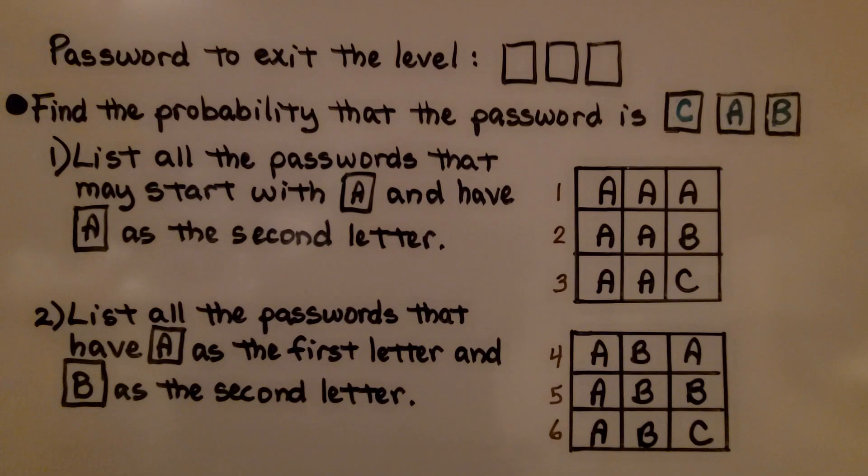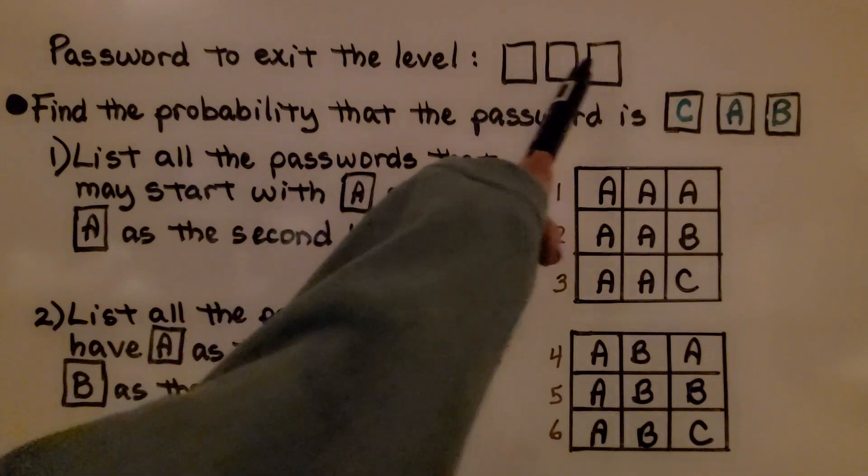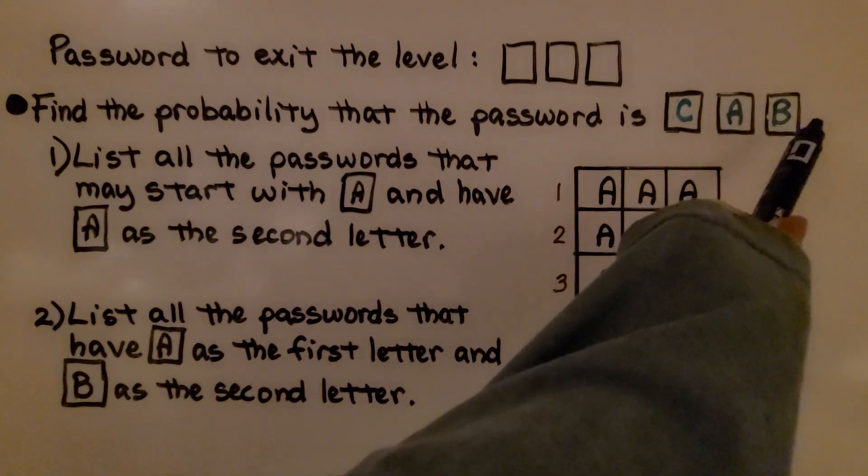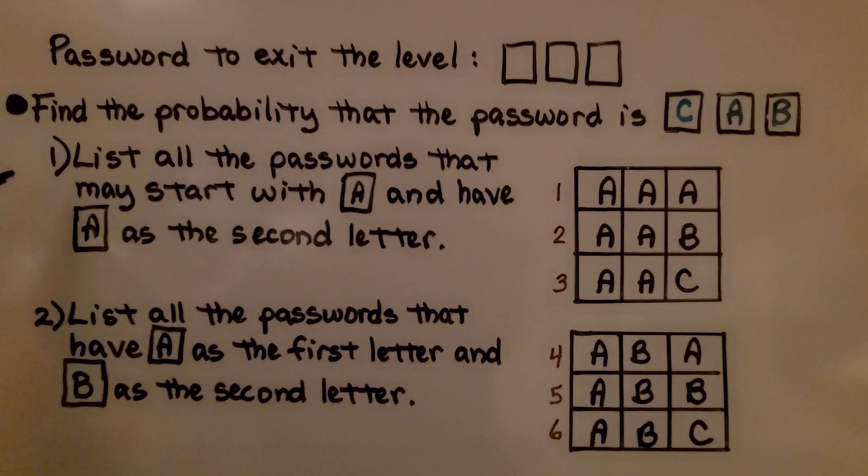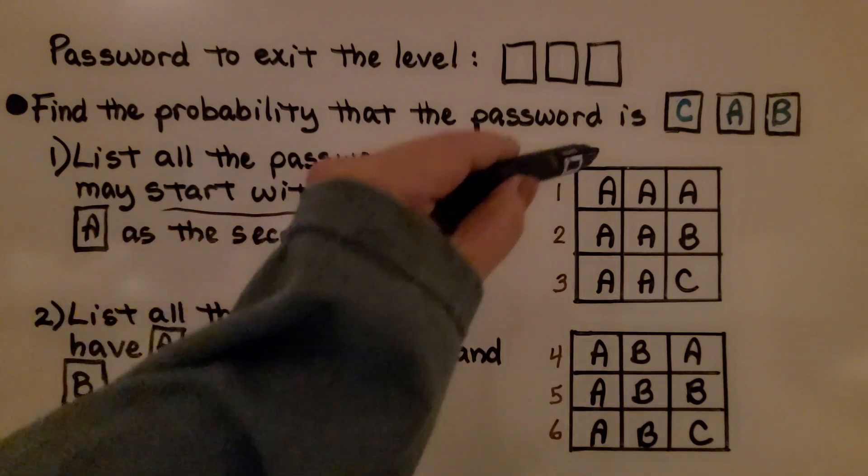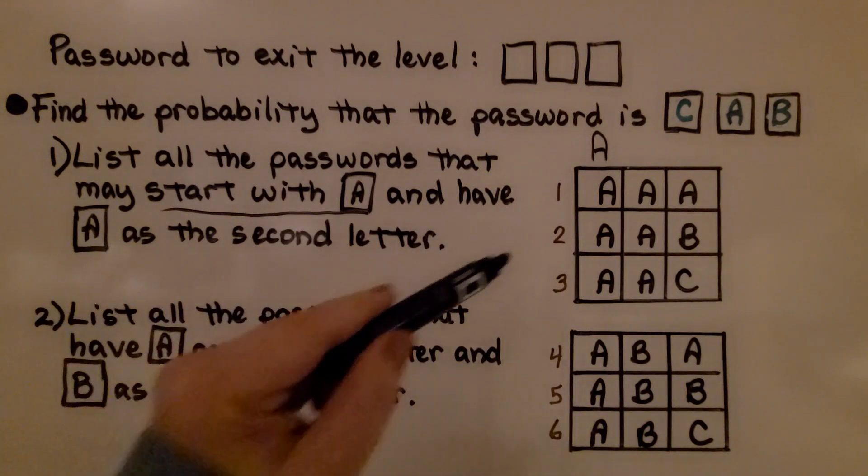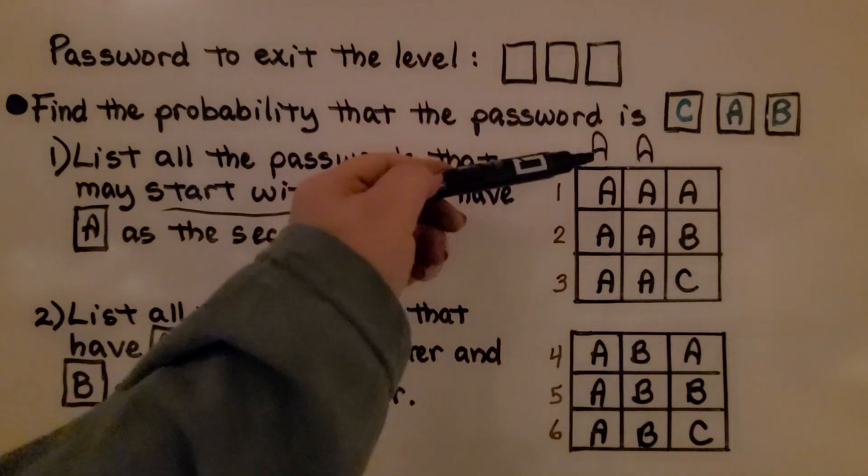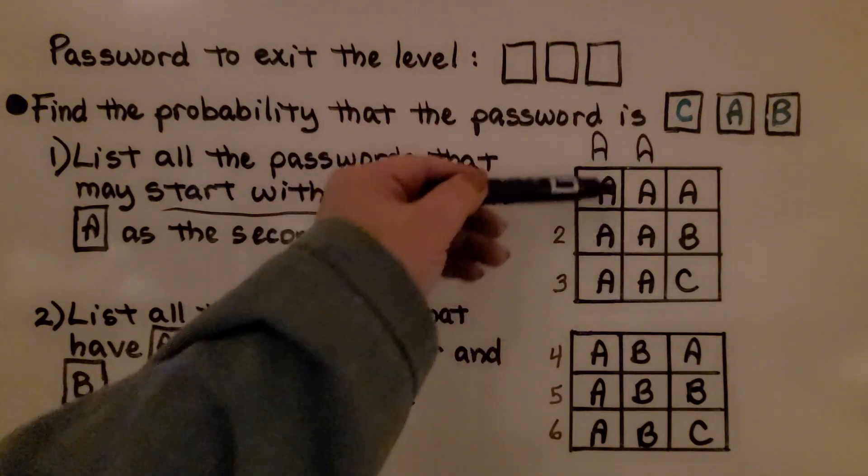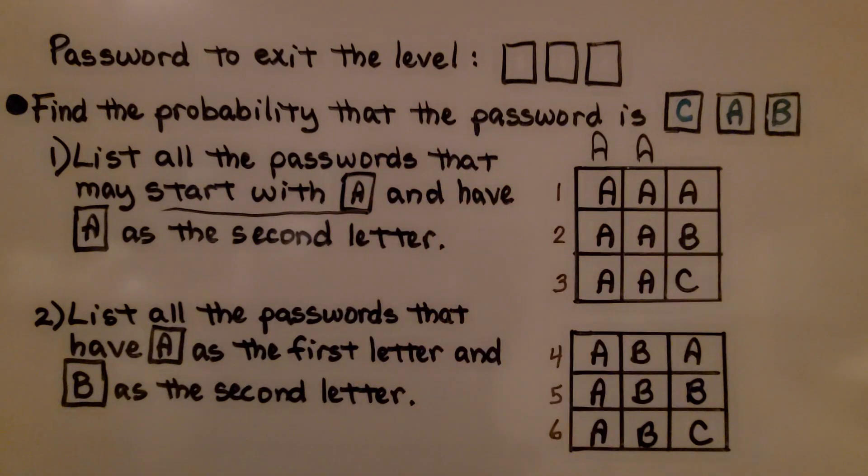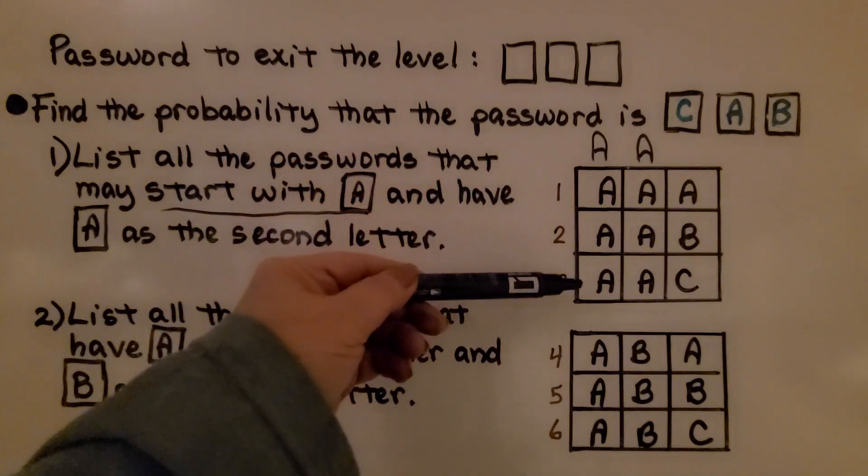We're trying to find this password to exit the level of the video game. We don't know what it is. But it's telling us to find the probability that the password is C, A, B. First thing we do is list all the passwords that may start with A. So, all of these start with A, and they have A as the second letter. So, in these boxes we have A, A, and then for the third one we have A, B, C. That's three different possible passwords.